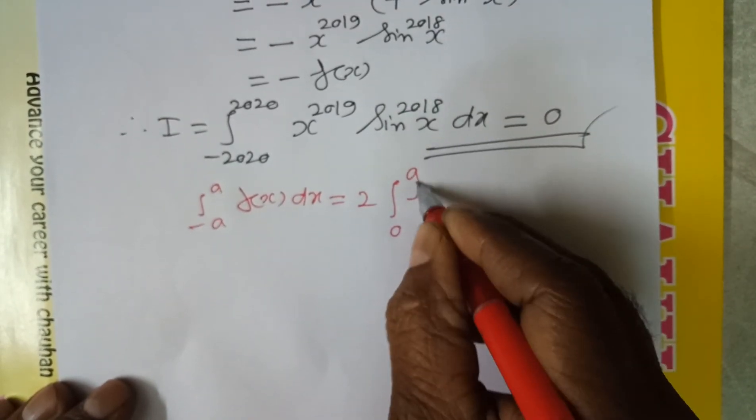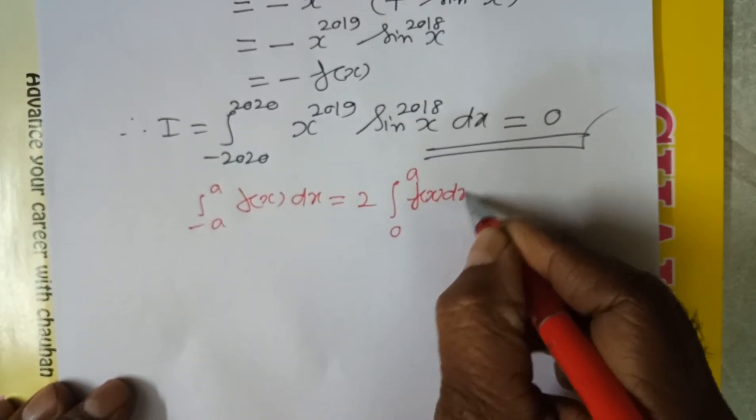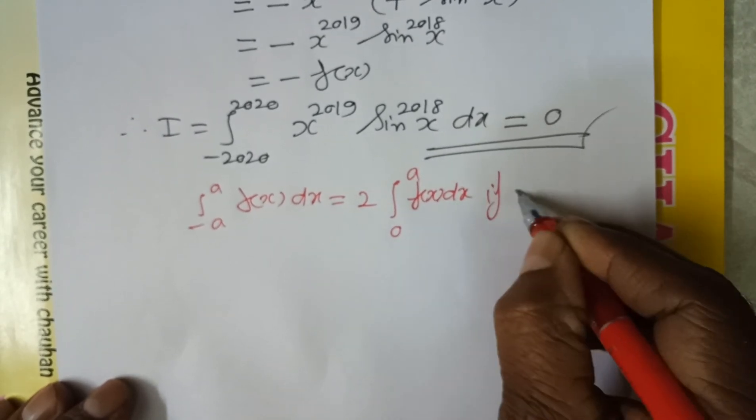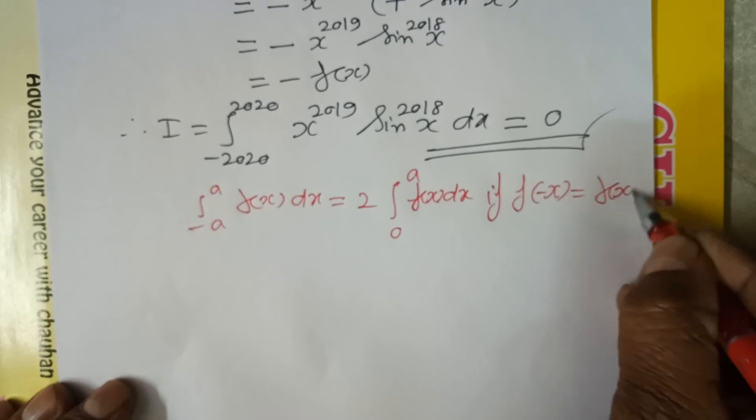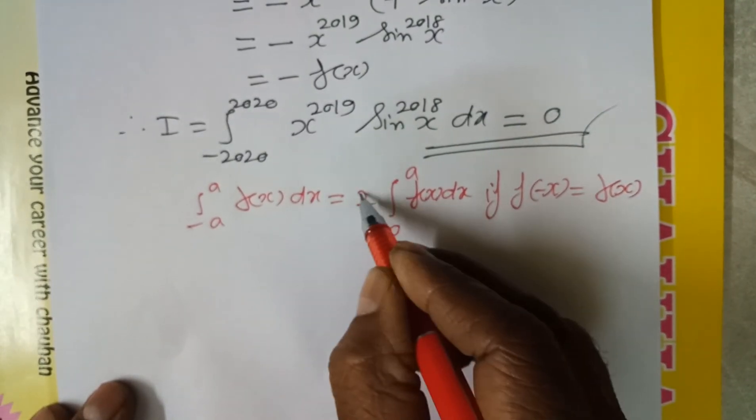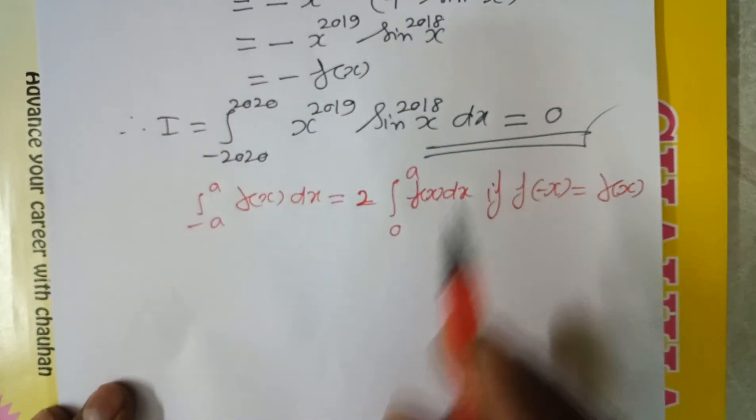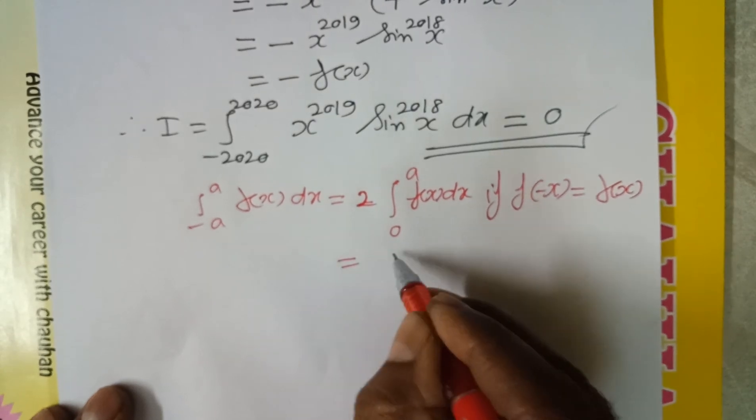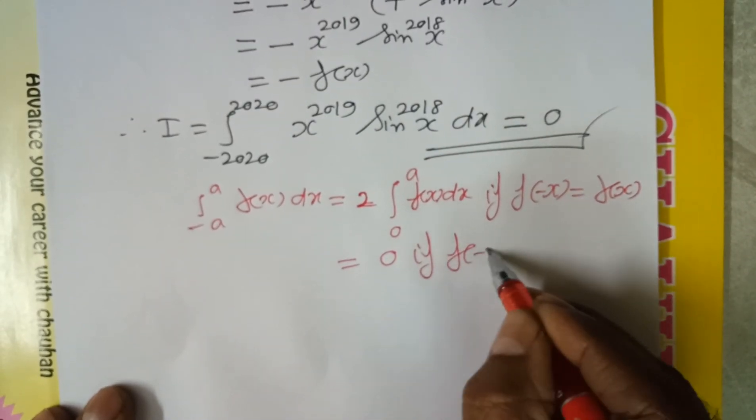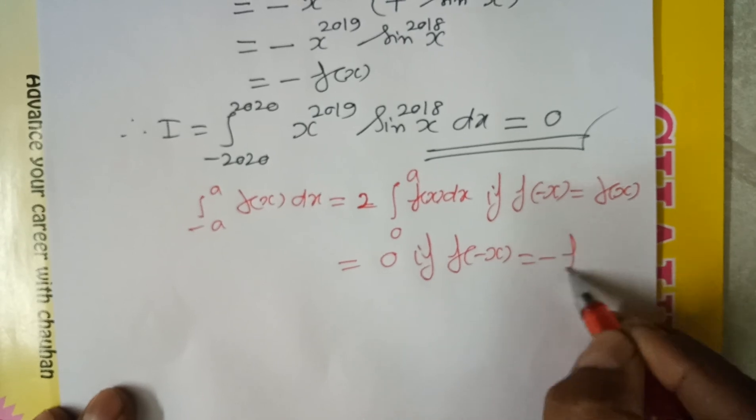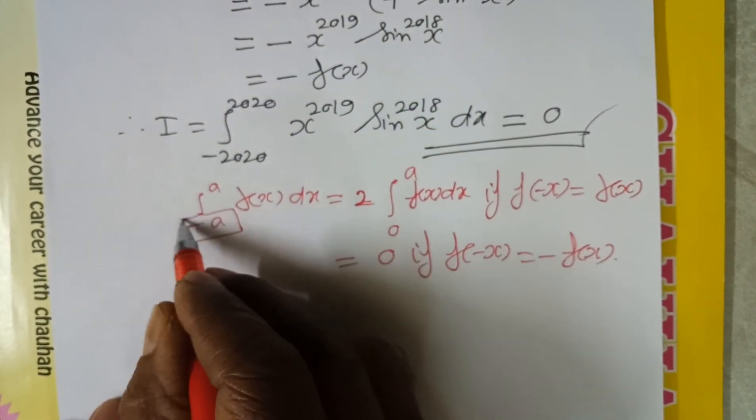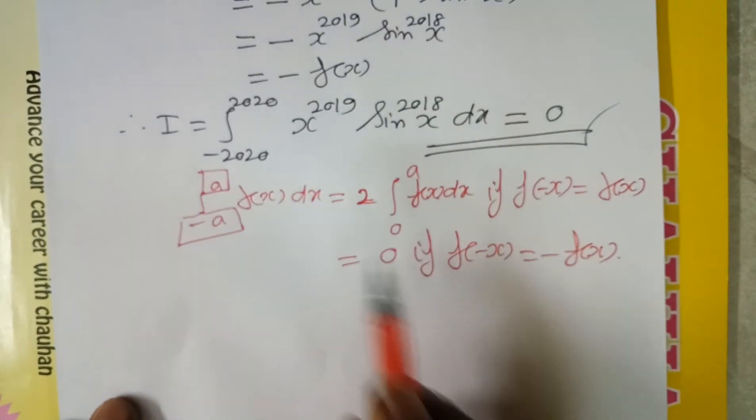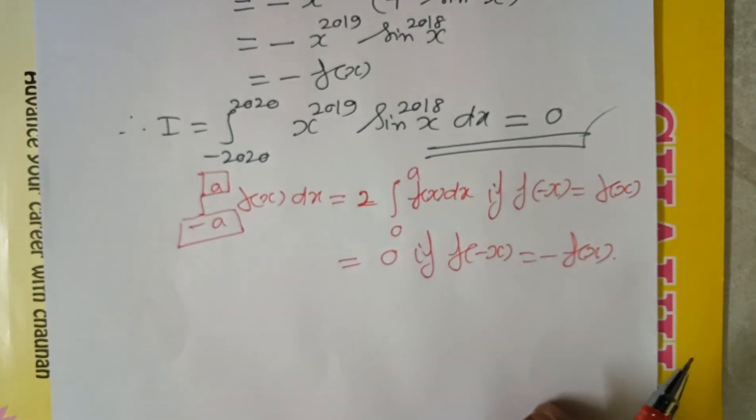This equals 2 times integral from 0 to a of f(x) dx. This is the first piece, valid when the function is even, f of minus x equals plus f(x), then the integral doubles and the limit becomes 0 to a. This integral value is 0 when f of minus x equals minus f(x), and the limit is minus a to a. Try this property once.